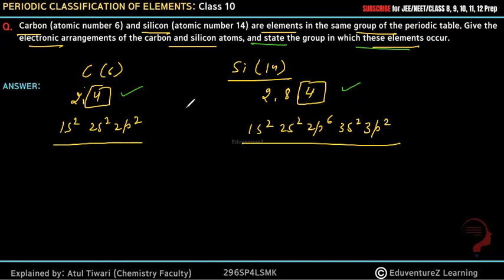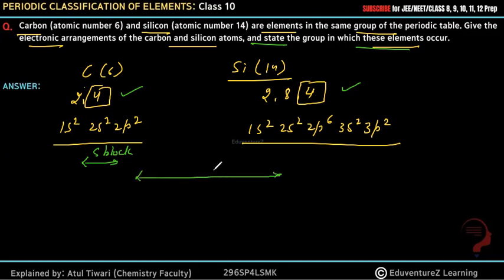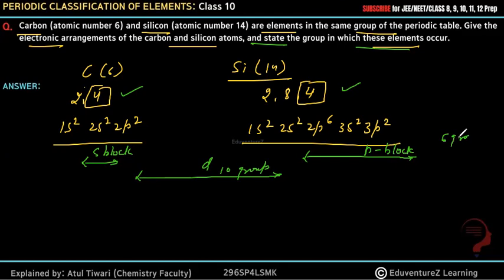Now, looking at the periodic table, there are four blocks. The first is the s-block, which has 2 groups. Then in the middle comes the d-block, which has 10 groups. After that comes the p-block, which has 6 groups.